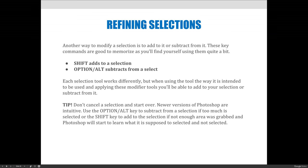I highly recommend: do not hit cancel, do not hit undo, and do not deselect and try to make your selection over again if whatever selection tool you're using accidentally grabs too much. Instead, use the Option or Alt key to subtract and Shift to add, because the more you do it, Photoshop is learning from what you're doing and will make better selections down the road.